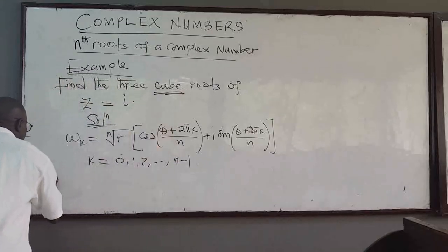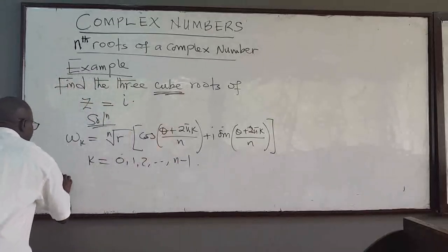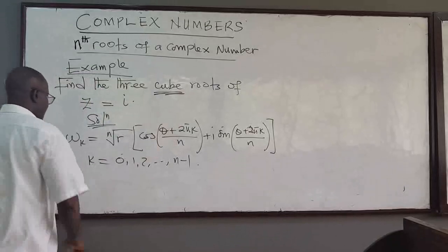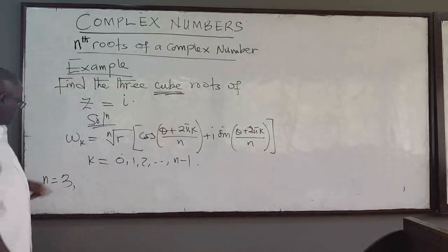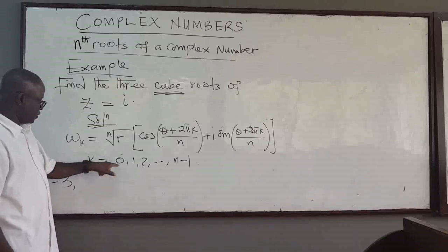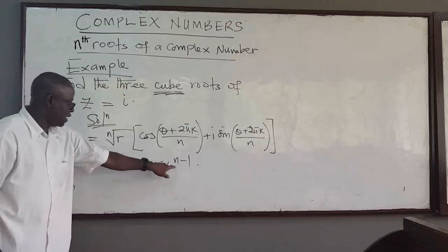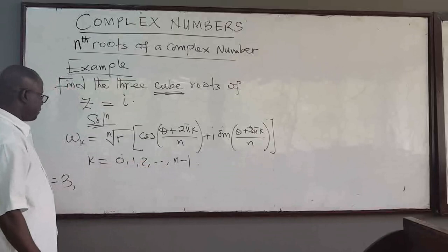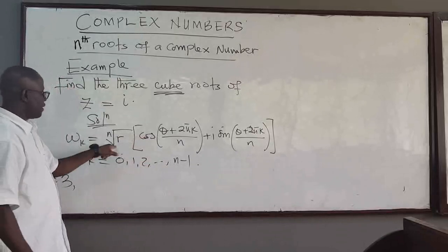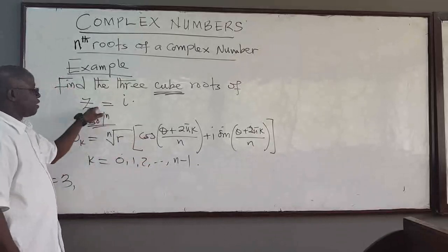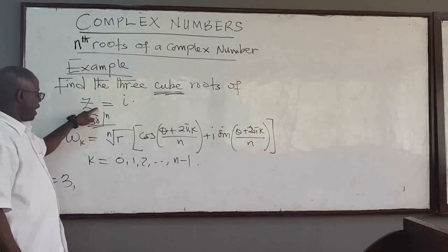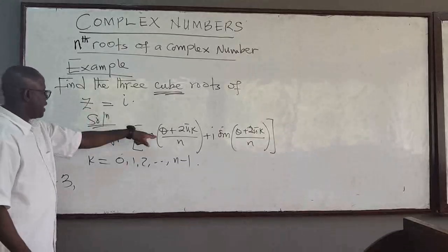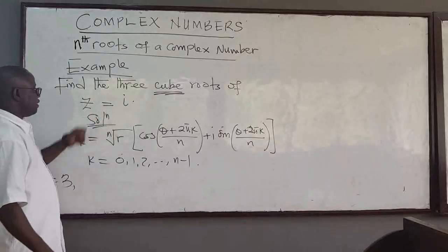In this case we want the cube roots, so n will be equal to 3, and k goes from 0, 1, up to 2 because of n minus 1. Now we need to find theta and r from the complex number.